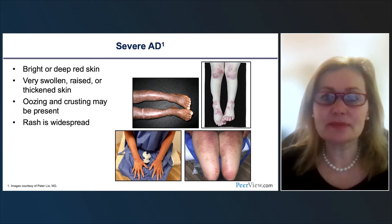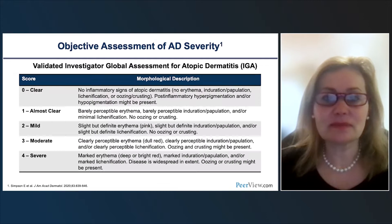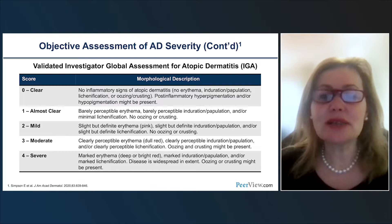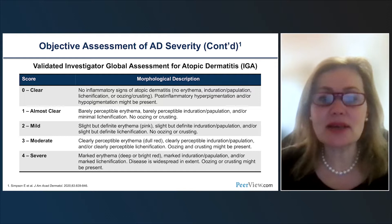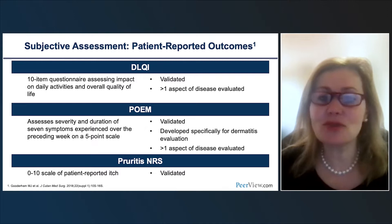We have several tools to objectively assess the severity of atopic dermatitis: the EASI scale, up to 72, and the SCORAD, up to 103. We also have the validated IGA for atopic dermatitis, which is utilized in clinical trials, and a modified version now used as vIGA in multiple trials. For subjective tools, we have quality of life assessment tools like the DLQI, POEM, and a pruritus NRS, which is very important because itch is the hallmark symptom of atopic dermatitis.